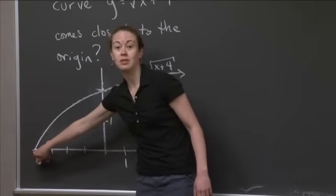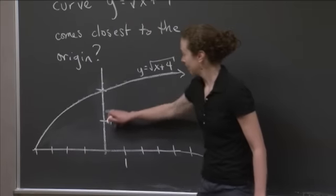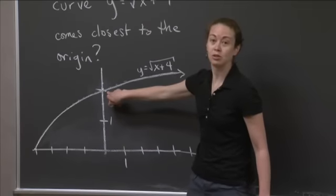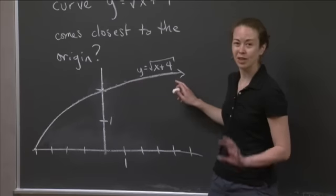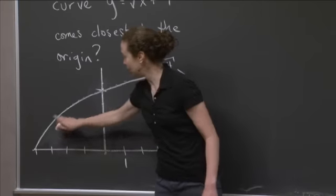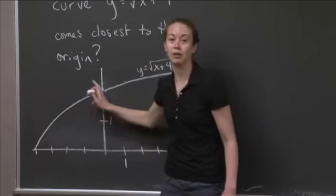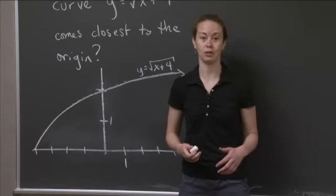at negative 4, 0, the distance to the origin is 4 units. And here, at 0, 2, the distance to the origin is 2 units. We could safely say it's probably further away here. So we're anticipating that somewhere along the curve in this region is where we should find our place that's closest to the origin.